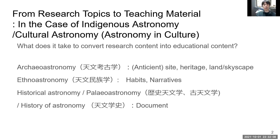In the field of archaeoastronomy, the research topics of ancient sites, heritage, landscape, and skyscapes are research topics. In the field of ethnoastronomy, the research target of astronomical habits or narrative interview data is the research tool or topic. On the other hand, in historical astronomy or history of astronomy, the tool of research is historical documents. So, how does it take to convert these research contents into educational contents?